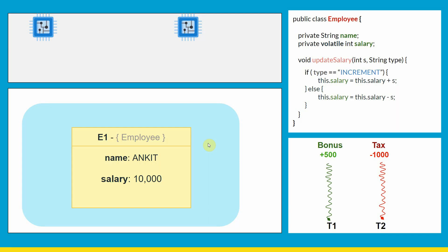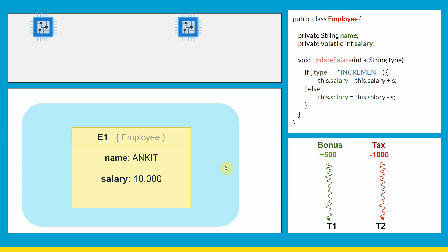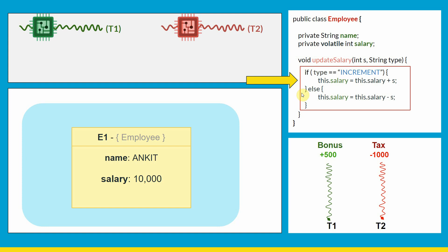That solves one problem, but there is one more problem in multi-threading. The Employee class has a method updateSalary which takes an amount and the type of operation — if the type is increment it increments the salary, otherwise it decrements. For simplicity consider two tasks: adding bonus to the salary and subtracting tax. If T1 and T2 are simultaneously picked up by two threads, this particular block of code is called critical code.